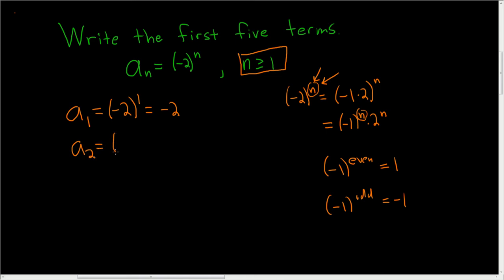So a sub 2 is negative 2 squared. That's even, so we're going to get a positive 4. That's the whole point of me doing all this, I guess. A sub 3, it's negative 2 cubed, but 3 is odd, so we're going to get a negative answer.